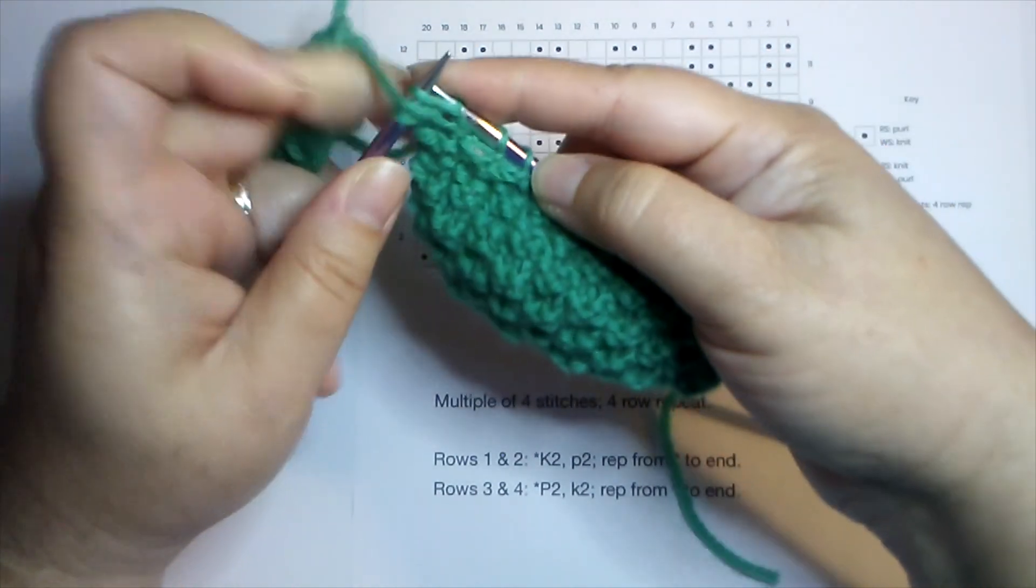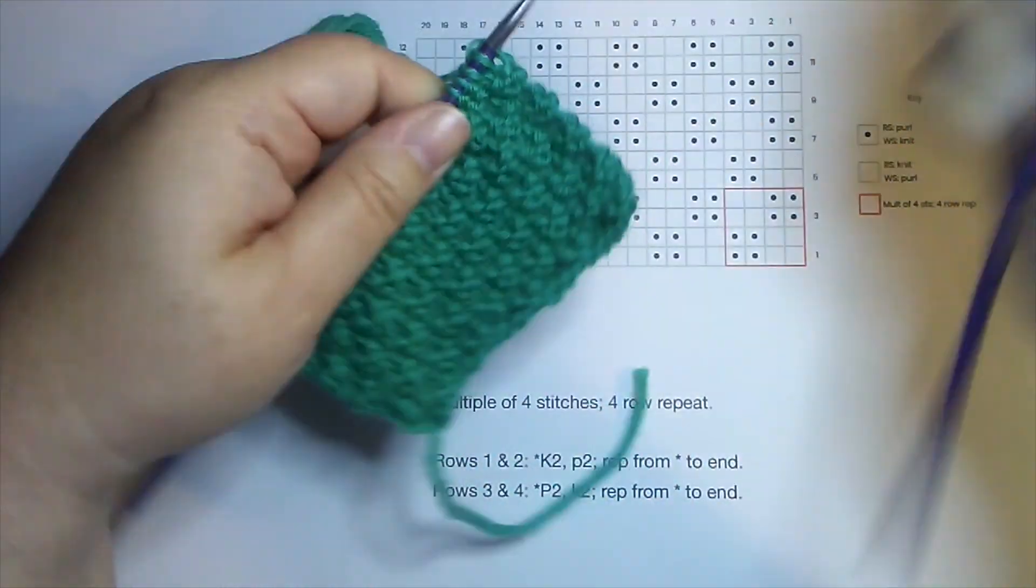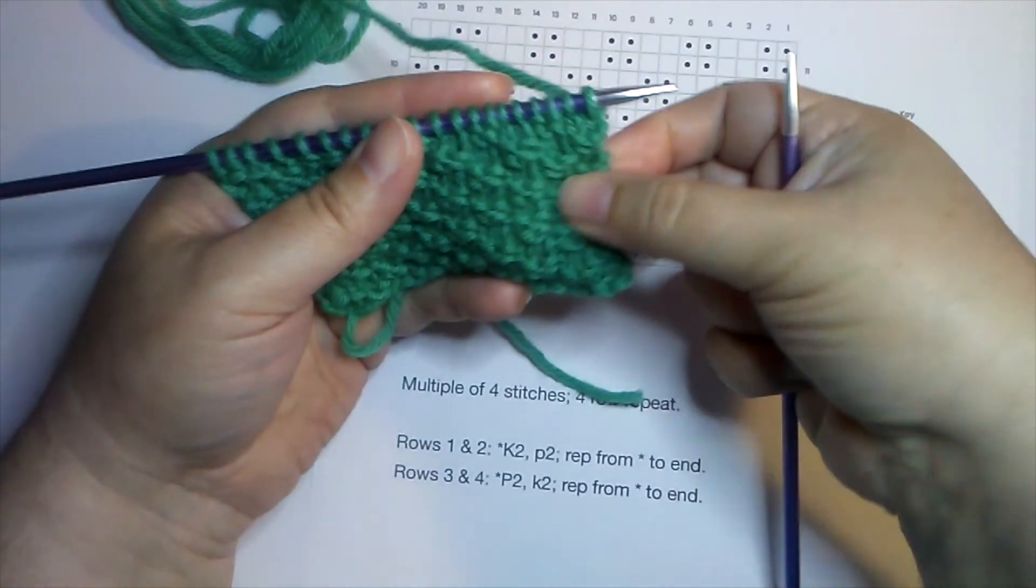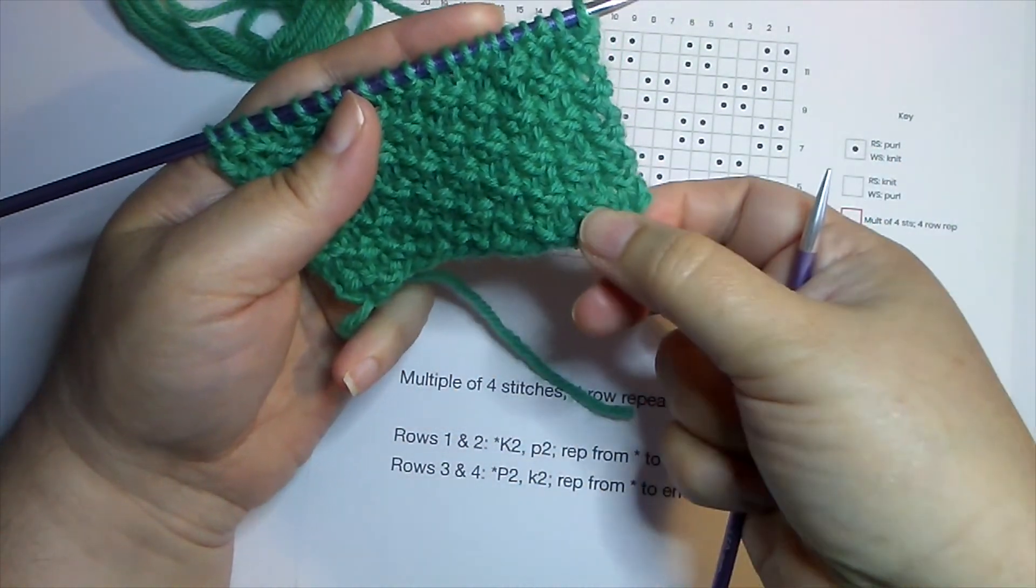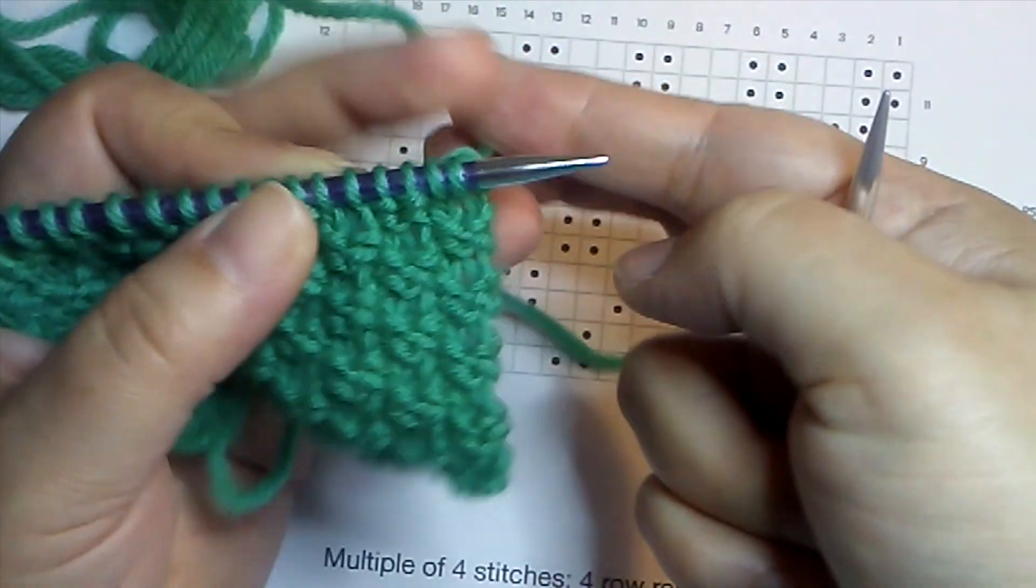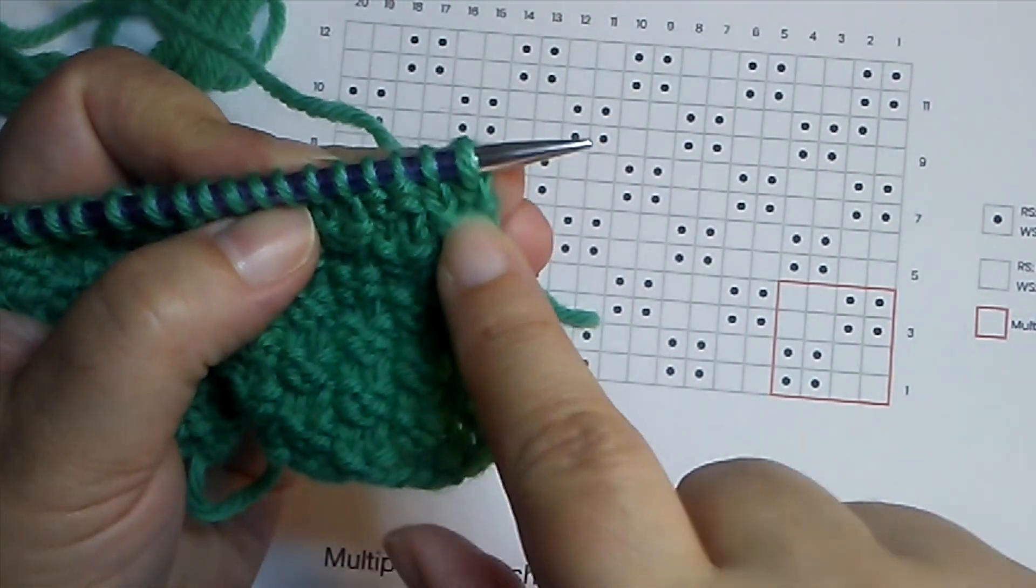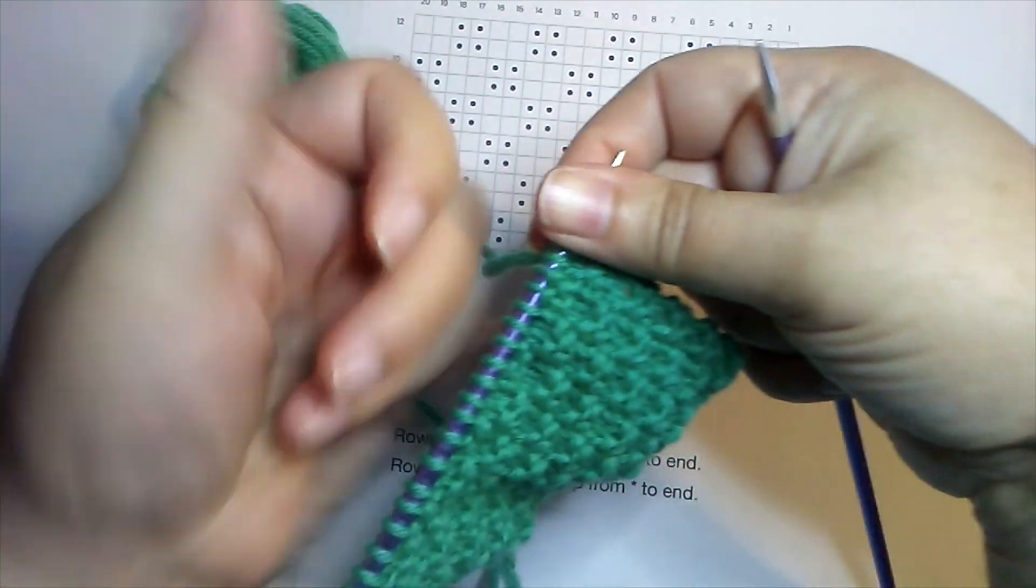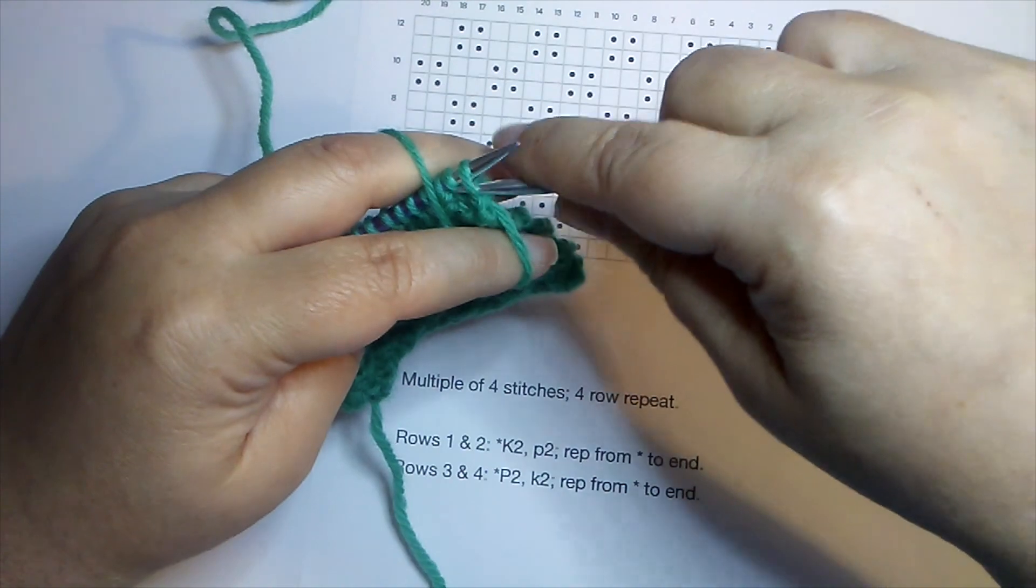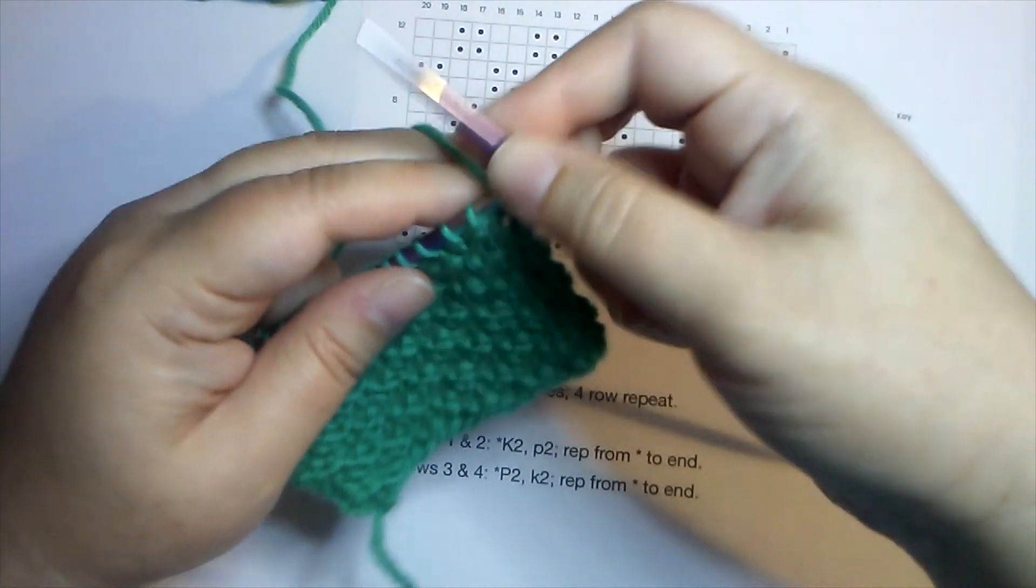It's a very easy pattern to remember. You just have to know what your stitches look like. You have to be able to tell the difference between a purl stitch and a knit stitch when it's in your work. And that way, whenever you set this down, you'll be able to pick it right back up and continue wherever you left off in the pattern.